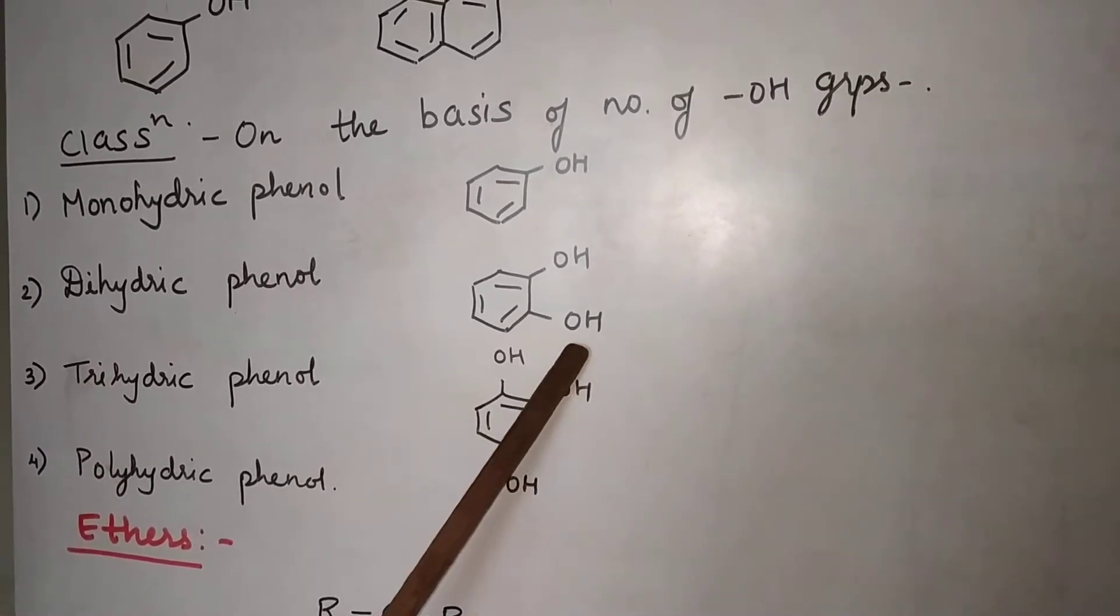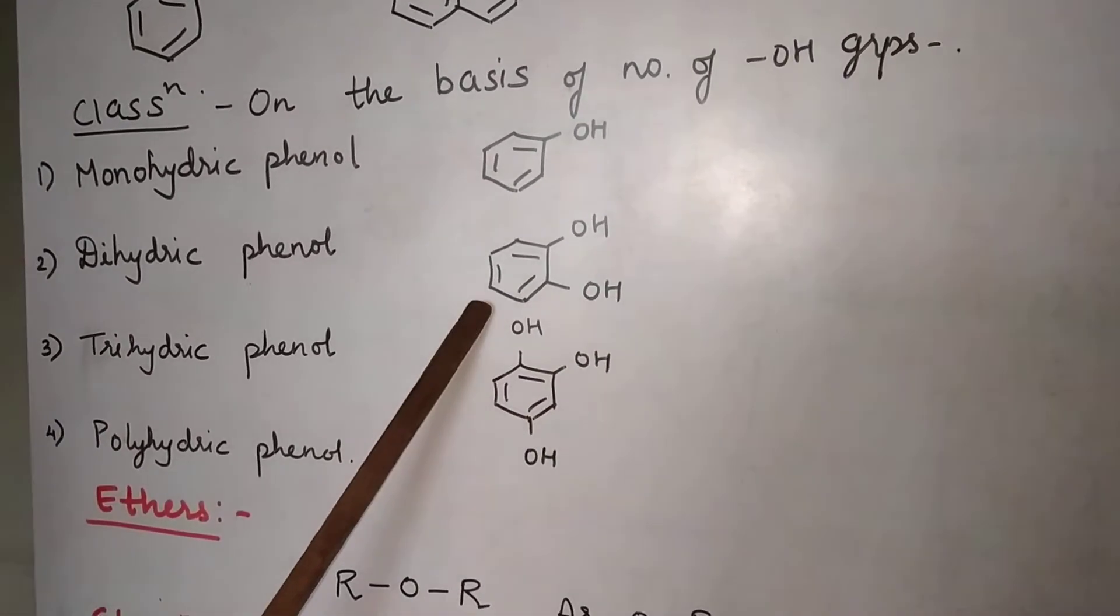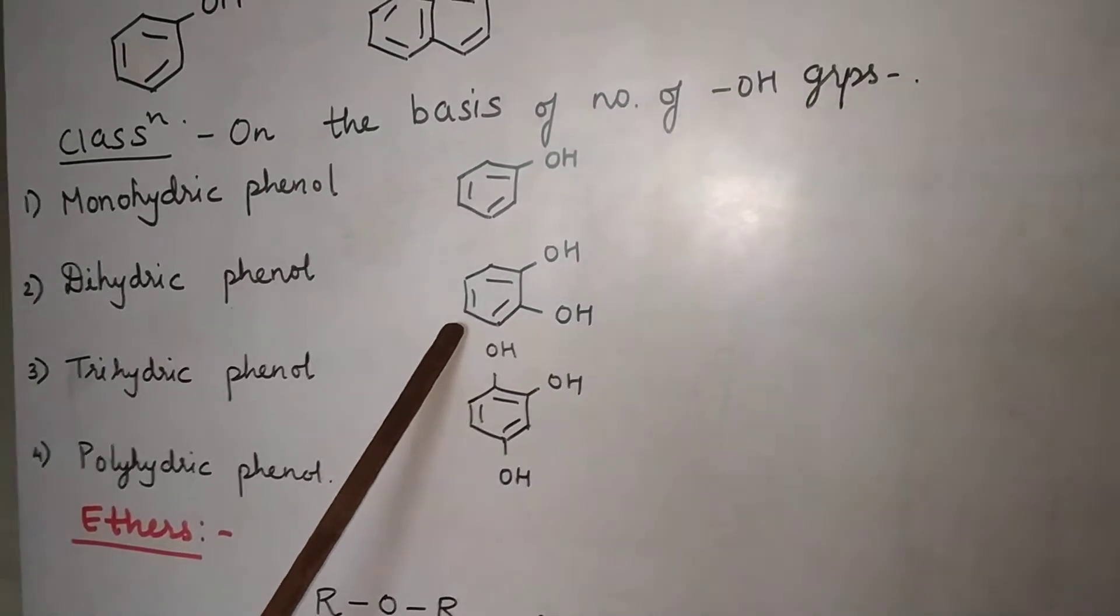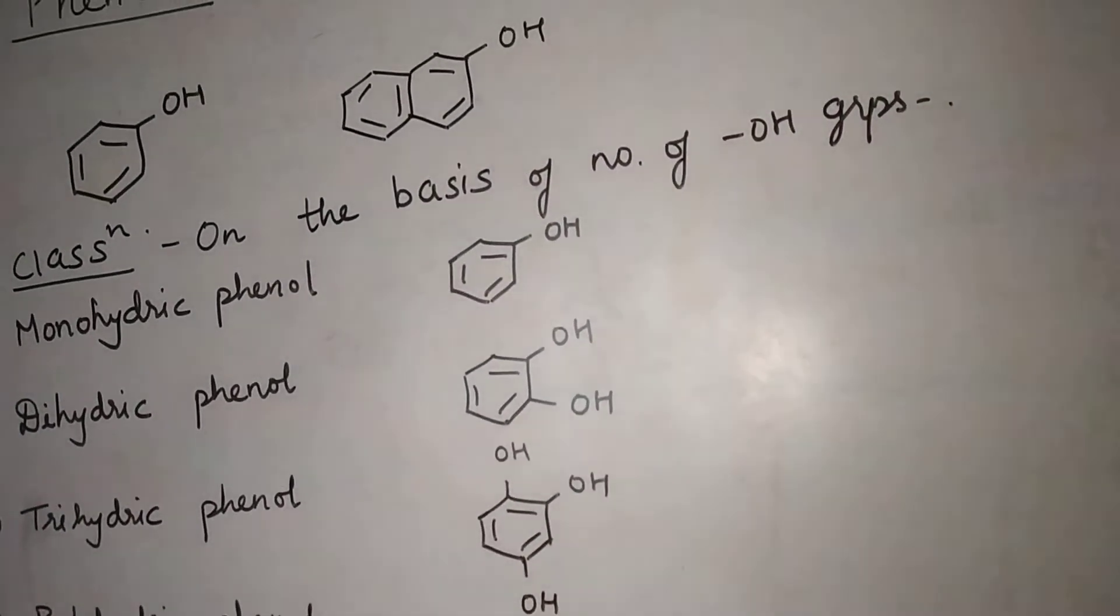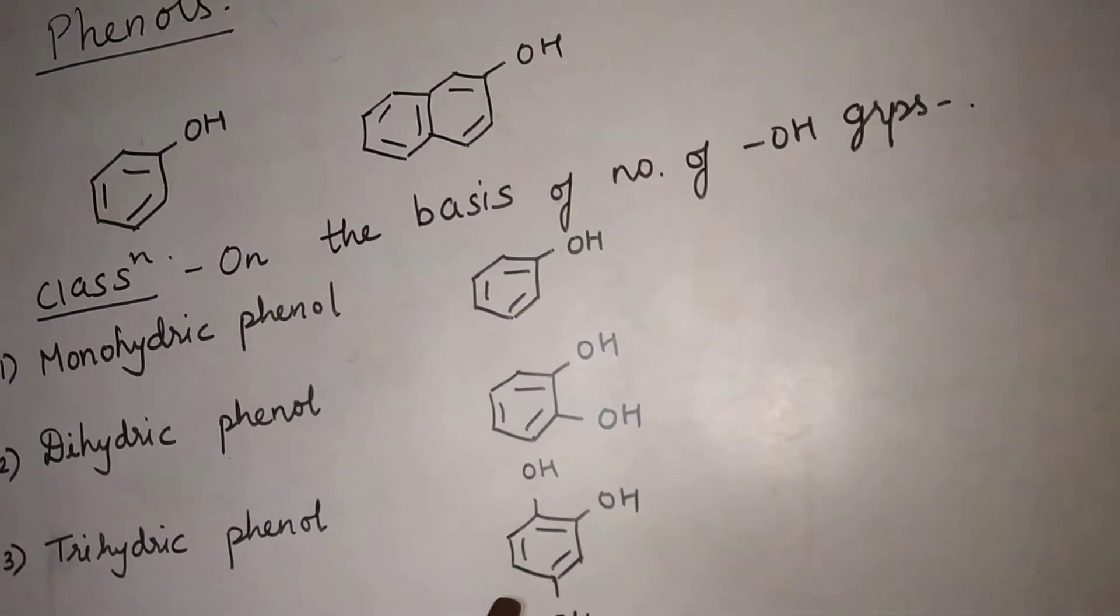Dihydric means there are two OH groups attached directly to the benzene nucleus, to the aromatic ring. Trihydric phenol means there are three OH groups attached to phenols.